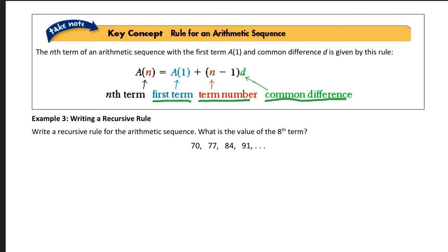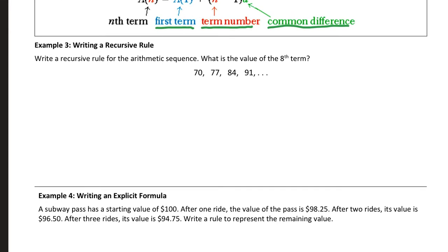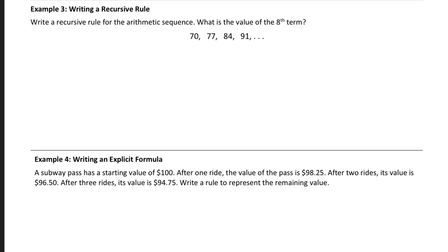So in example 2, we're going to talk about how to write something called a recursive rule. A recursive rule is a rule that we use when we list the first term of a sequence and the common difference to say this is how you get the next term based off of the last term. So the recursive rule for this sequence, the things we have to know, we have to know that the first term of this sequence is 70. The common difference is 7. So to write the recursive rule for this function, the first thing you list is that the first term is 70.